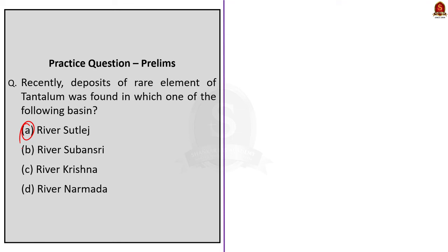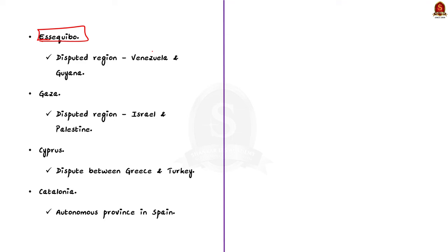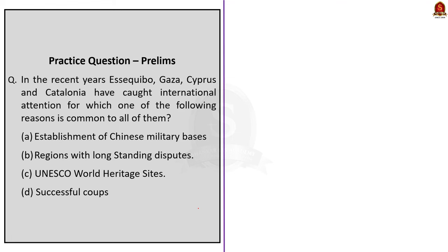In recent years, Essequibo, Gaza, Cyprus and Catalonia have caught international attention. The correct option is B — regions with long-standing disputes. Essequibo is a long-standing dispute between Venezuela and Guyana; Gaza is a disputed region between Israel and Palestine; the Cyprus conflict is an ongoing dispute between the Greek Cypriot community and the Turkish Cypriot community in the north, essentially a dispute between Greece and Turkey; and Catalonia is an autonomous province in Spain which is seeking complete independence from Spain.